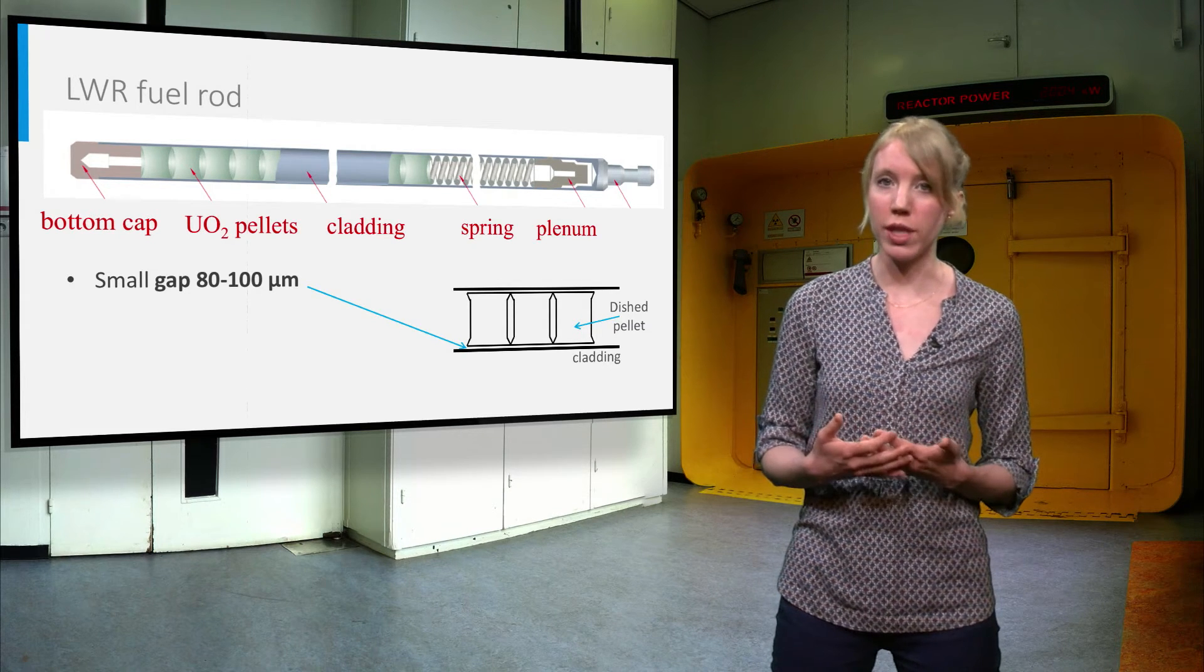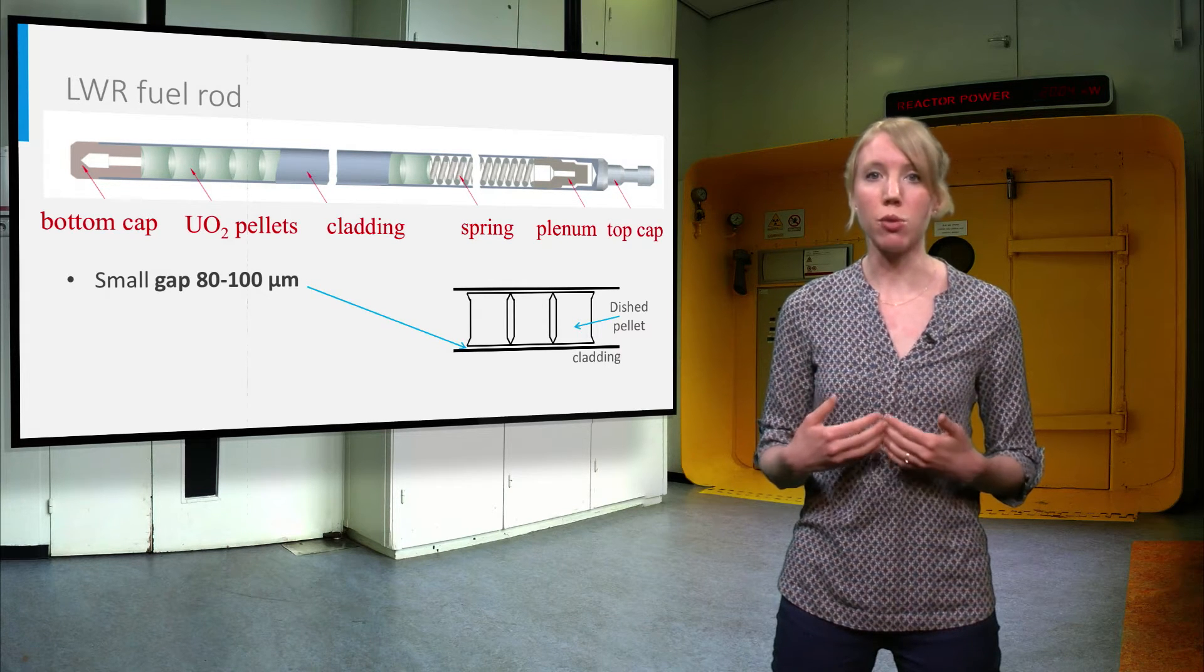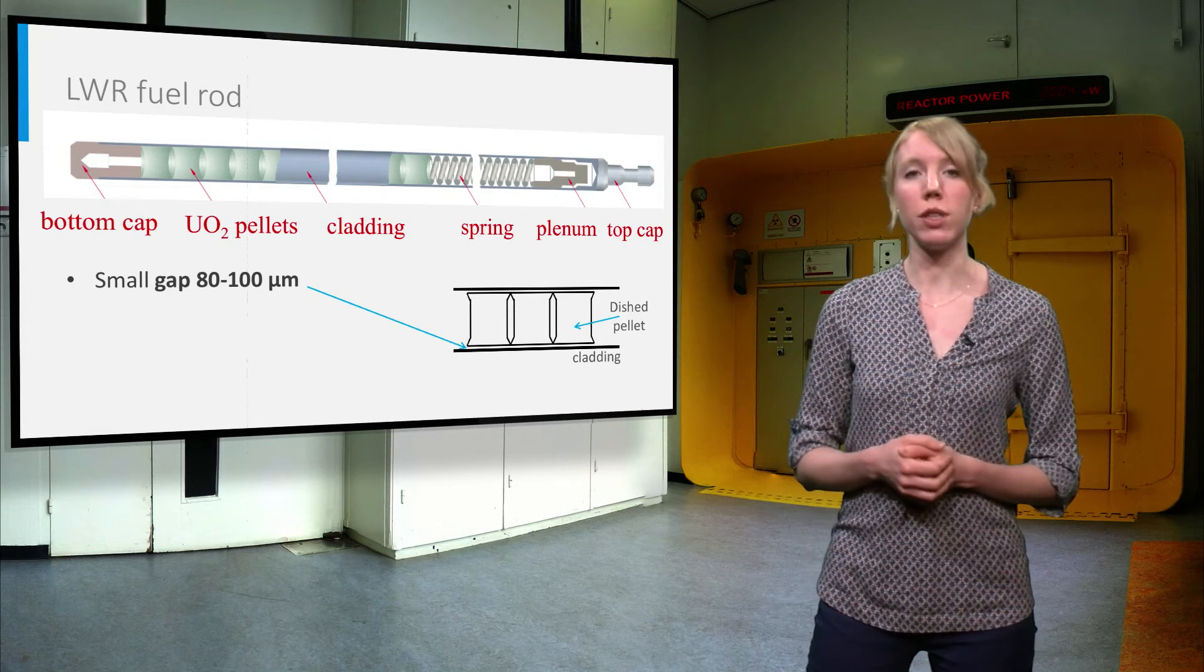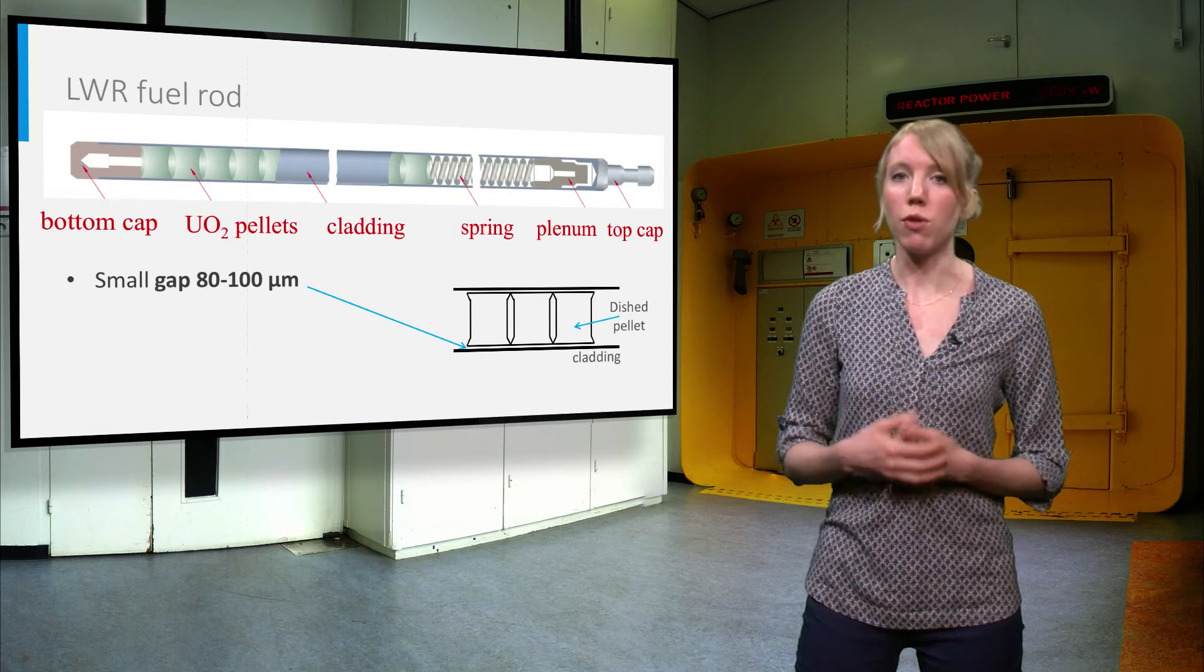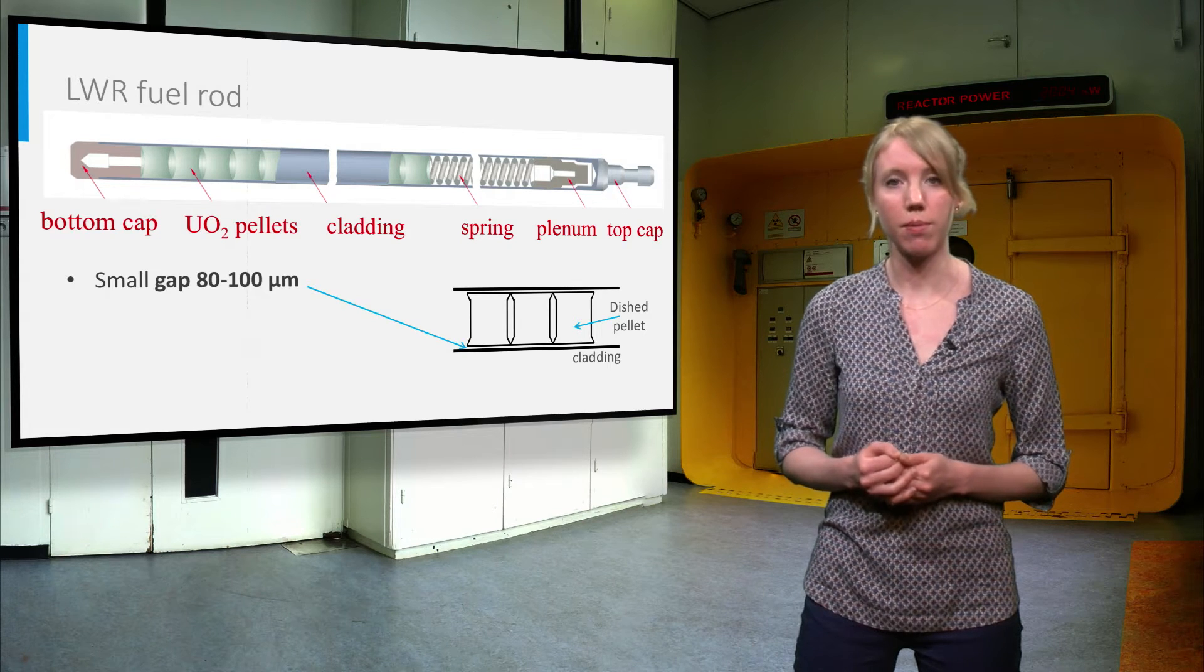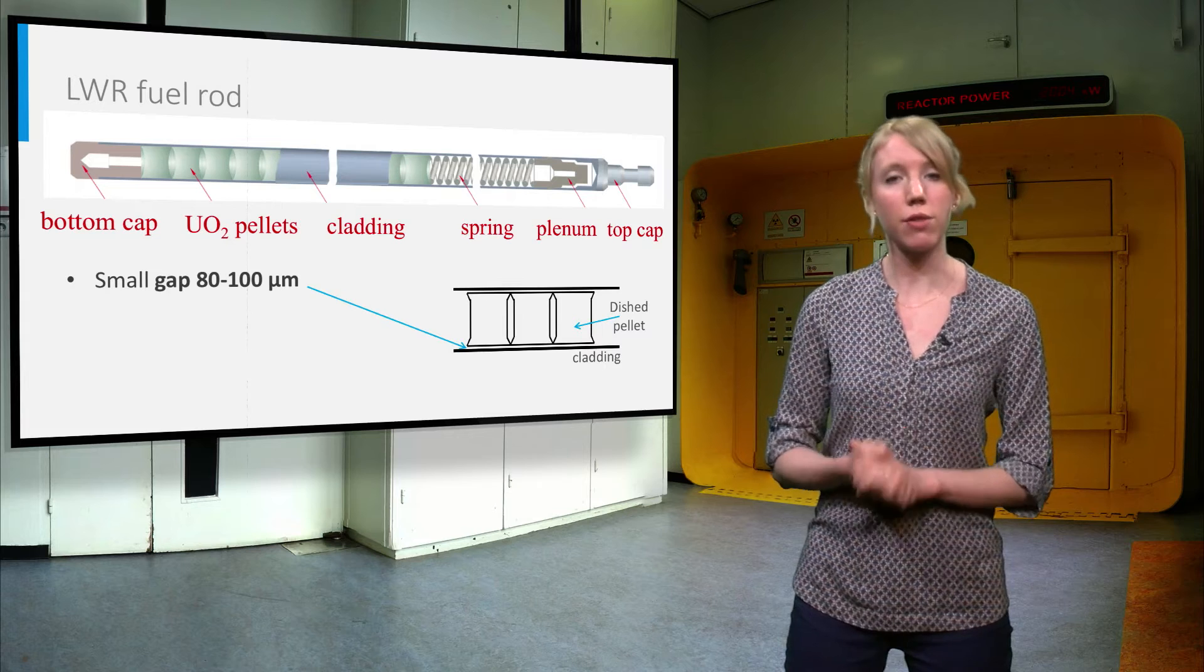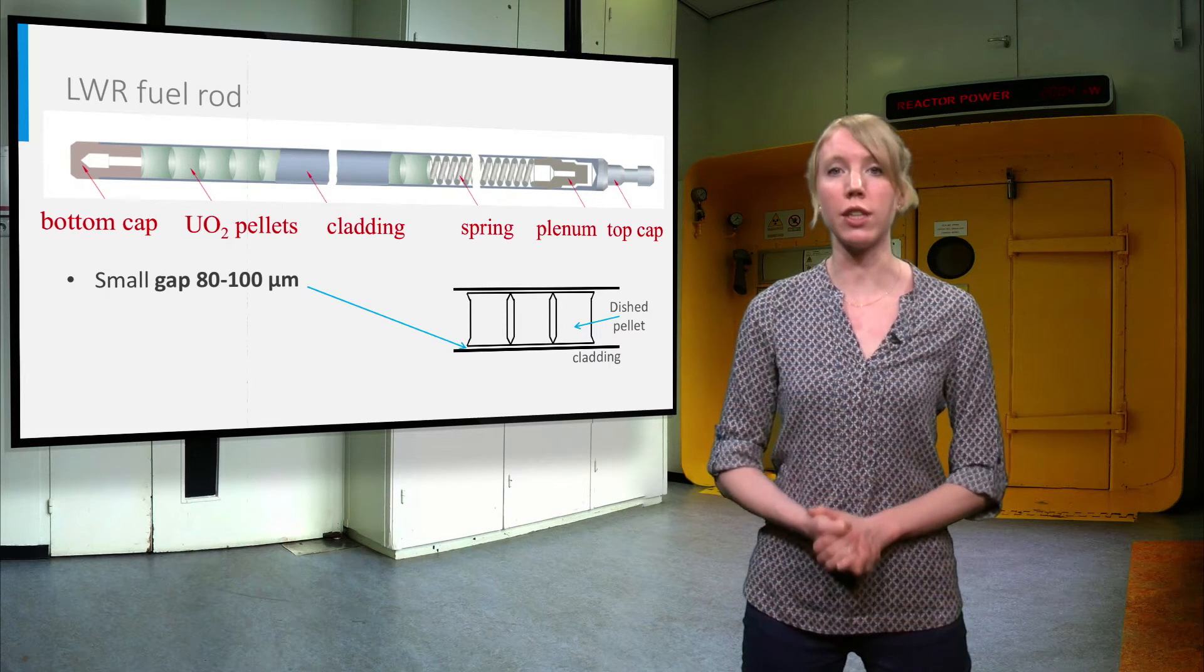Before closing by welding the end plug on the top, the rod is pressurized with helium gas at 20-25 bars to ensure that the fuel cladding gap and the plenum are filled with gas. Helium is chosen as it is inert and has the best thermal conductivity among the inert gases.